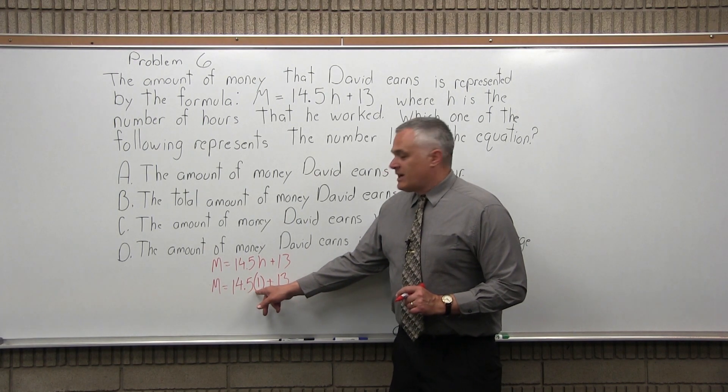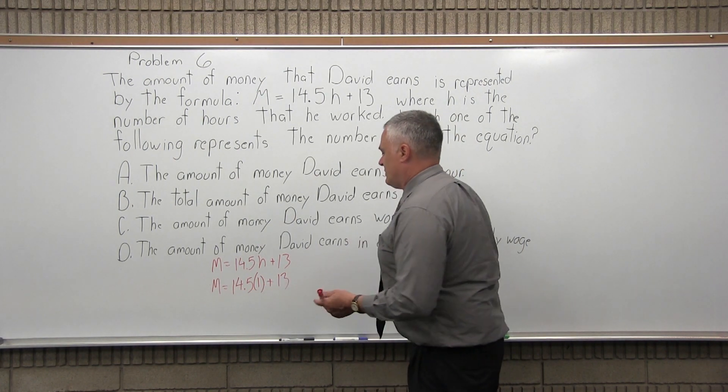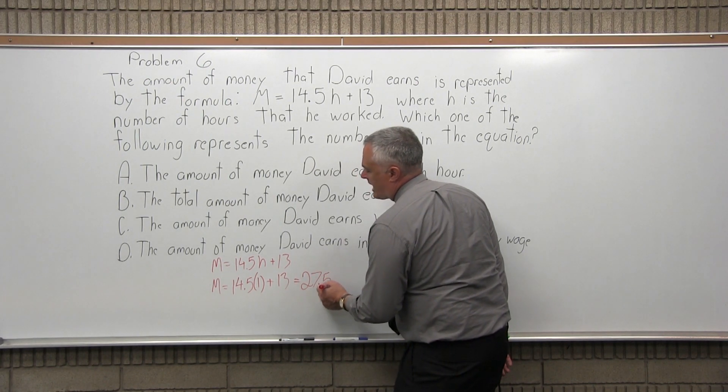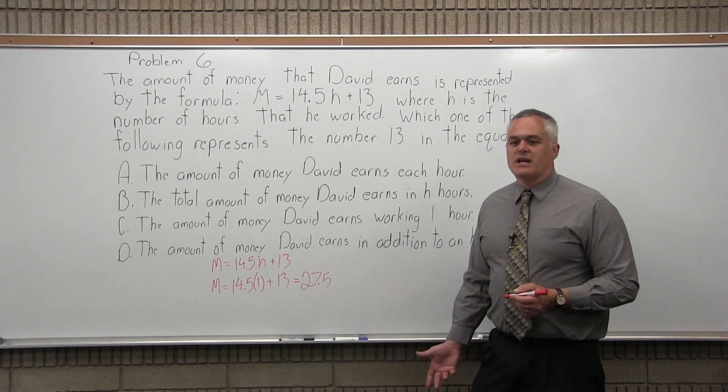14.5 times 1 is 14.5, you're going to add 13 to it, so you get 27.5. So if he works for an hour, he's going to make 27 and a half dollars, $27.50.